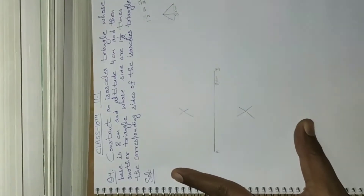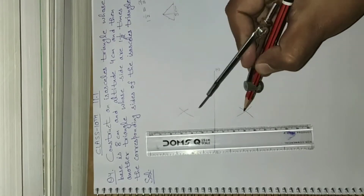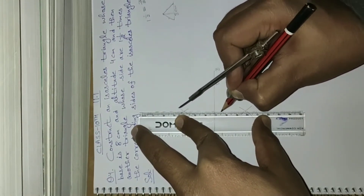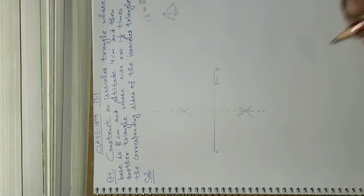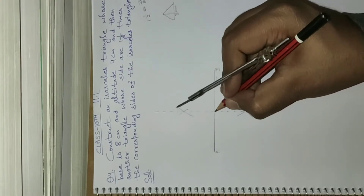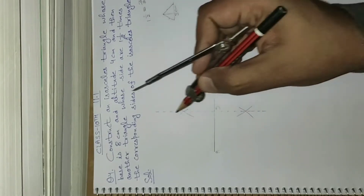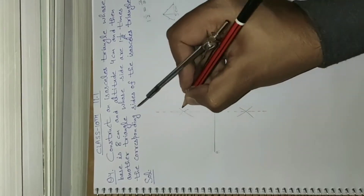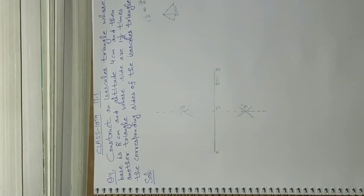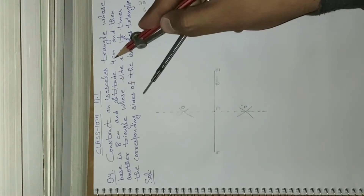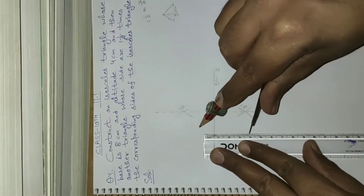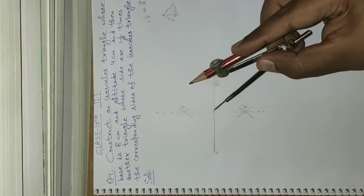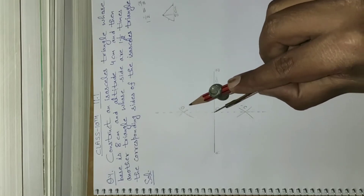Now join these intersecting points of the arcs with a dotted line. Name the point where this dotted line meets the base as D. Name these two intersecting arc points as O and O'. From point D, I shall make an arc of altitude 4 centimeters — open your compass to 4 centimeters.